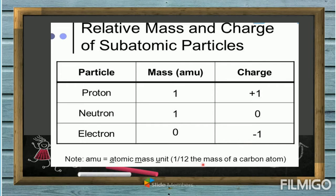AMU, or atomic mass unit, is equal to one-twelfth of the mass of a carbon atom — we will discuss that in our next lesson. For now, focus on the relative mass and charge: proton — one mass, positive charge; neutron — one mass, zero or neutral charge; electron — zero mass, negative one charge.